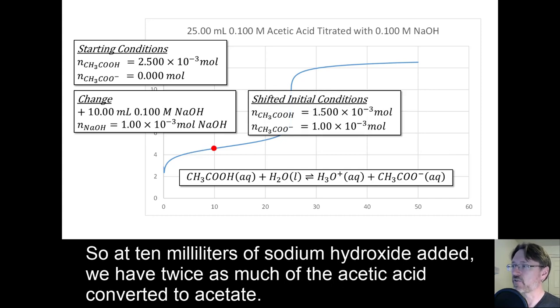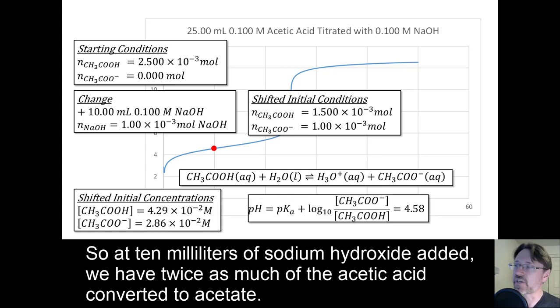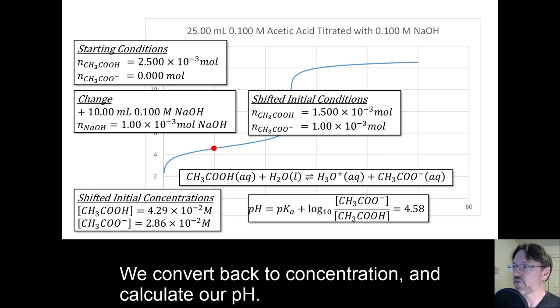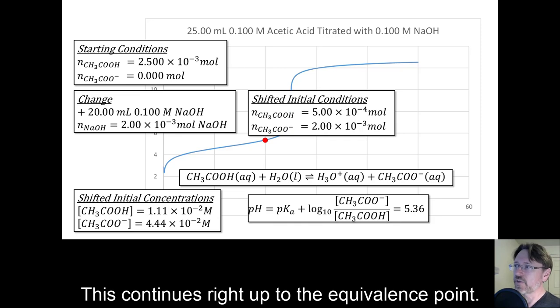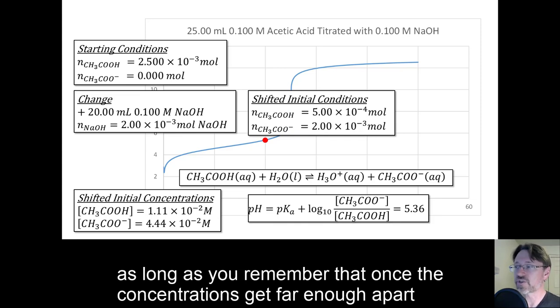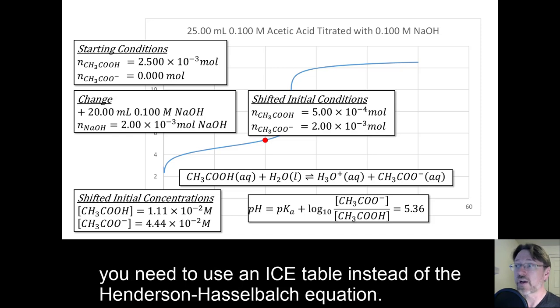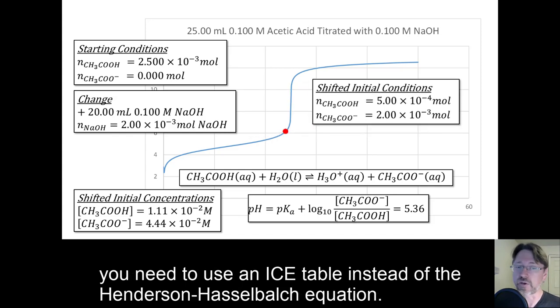So at 10 milliliters of sodium hydroxide added, we have twice as much of the acetic acid converted to acetate. We convert back to concentration and calculate our pH. This continues right up to the equivalence point. As long as you remember that once the concentrations get far enough apart, you need to use an ice table instead of the Henderson-Hasselbalch equation.